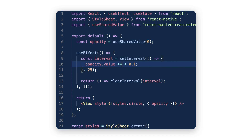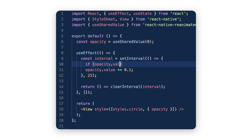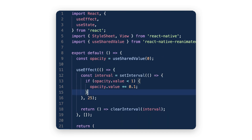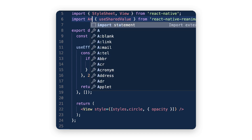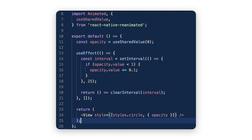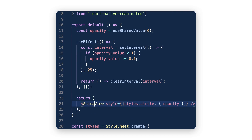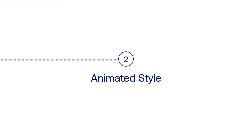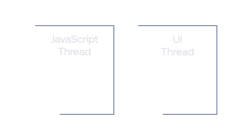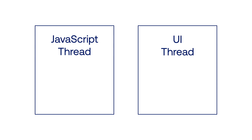At this point our view won't know how to deal with a shared value in its style, because it isn't just a number. Just like with Animated where we need to turn the element into an animated one, let's replace that view with an Animated.view that we get from Reanimated. By the way, Reanimated has a few basic elements like Animated.Image, Animated.ScrollView, etc., which come in really handy.